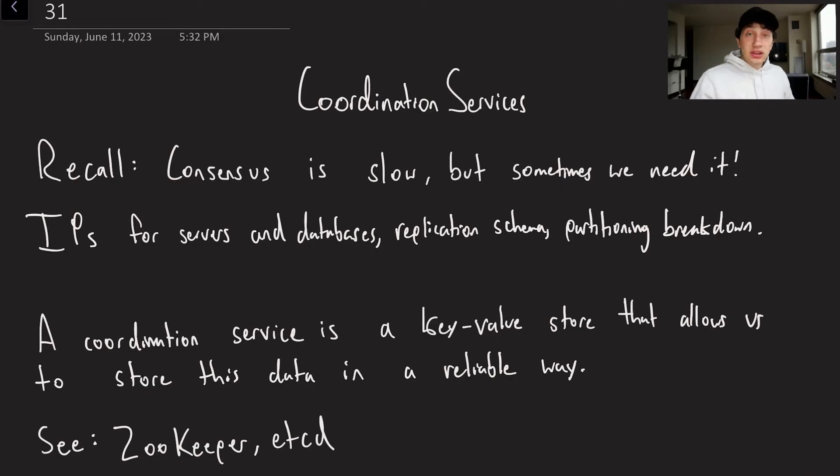All right, so like I mentioned, today we're going to be talking about coordination services. So there's not a ton of technical content to cover in this video. The reasoning being that we just did it in the last two. Coordination services are basically just thin layers that are built on top of some distributed consensus algorithm like Raft in order to help us with all of this configuration that we need within our distributed backend. So what type of configuration could that be?